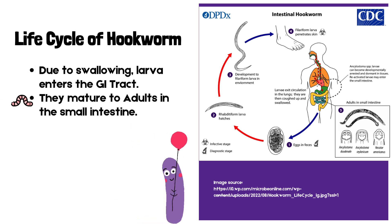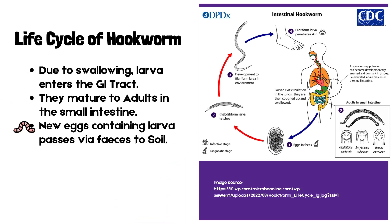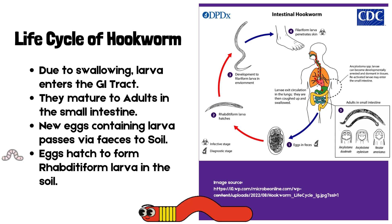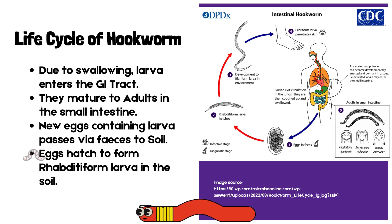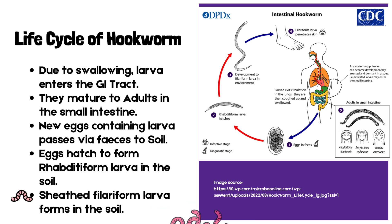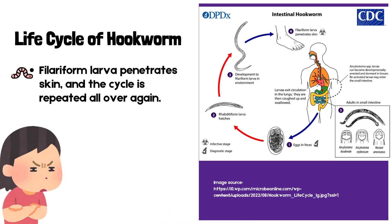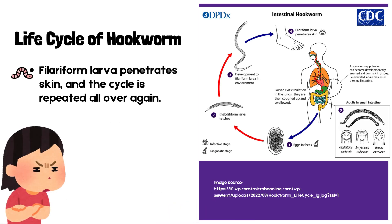The larvae mature to adults in the small intestine. New eggs containing larvae pass through feces to the soil. Eggs hatch to form rhabditiform larvae in the soil, which develop into sheathed filariform larvae. The filariform larvae then penetrate the skin, and the cycle is repeated all over again.